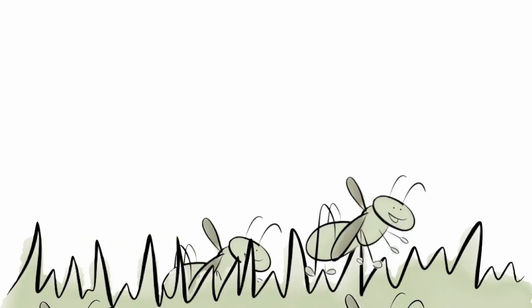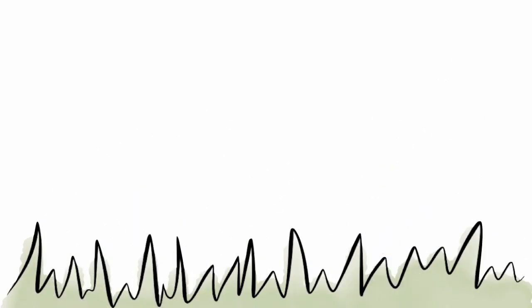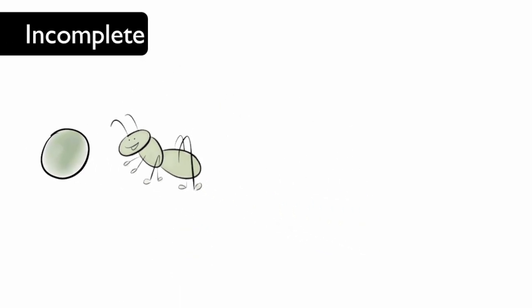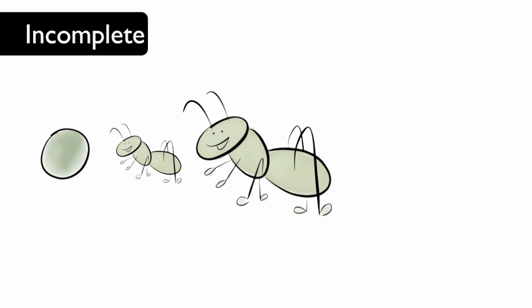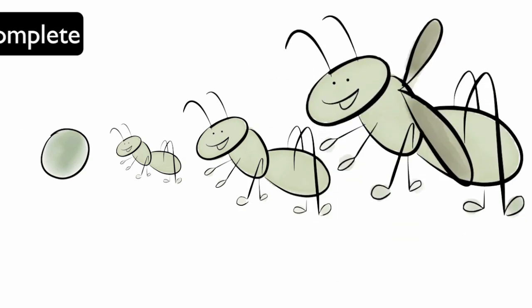A grasshopper goes through a different type of metamorphosis. The other type of metamorphosis is called incomplete metamorphosis. This type of metamorphosis starts with an egg.